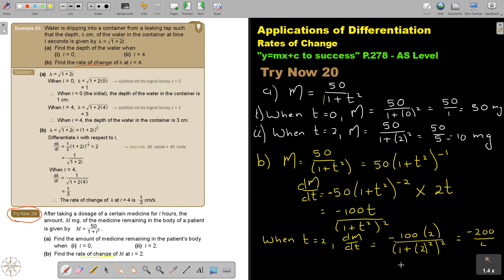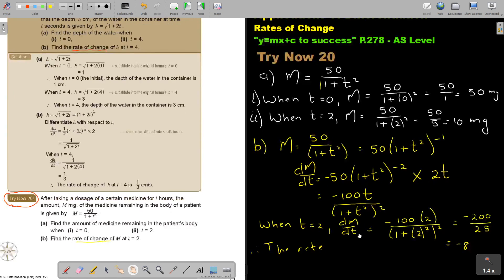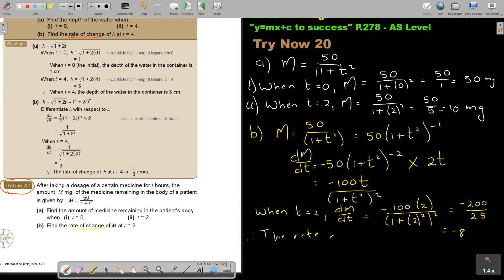So that will give me 5. And 5 times 5 is 25. So that's 25. The answer will be negative 8. Therefore, the rate of change of m when t is 2 is negative 8 milligrams per hour. That will be my final answer. Thank you.